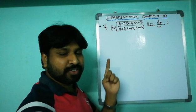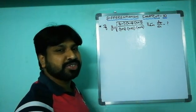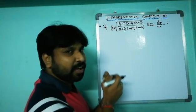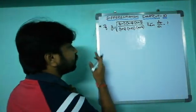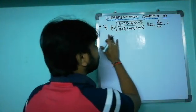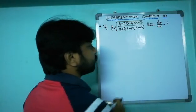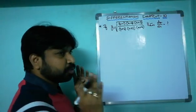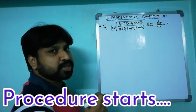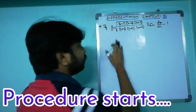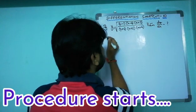I'll explain the shortcut formulation after completing the full procedure. Look carefully at the procedure first. Whenever these kinds of questions appear, you have to take logarithms on both sides.